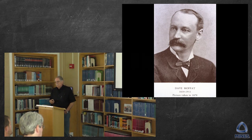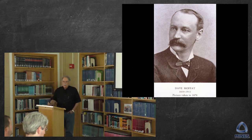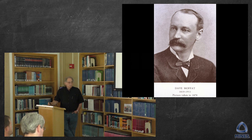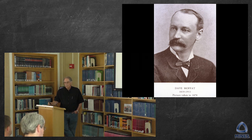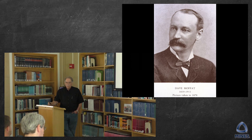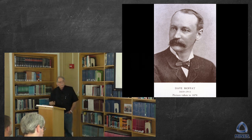So this guy got interested. His name is David Moffat. He had already made a fortune in mining with his partner Jerome Chaffee, the senator, in Leadville beginning in 1879. They had been involved at Caribou in Boulder County and had their fingers in pies in various mines all across the state. But by this point in time, he was the president of the Denver and Rio Grande Railroad and also vice president of one of the banks in Denver — First National Bank of Denver. Dave Moffat was a very astute businessman.